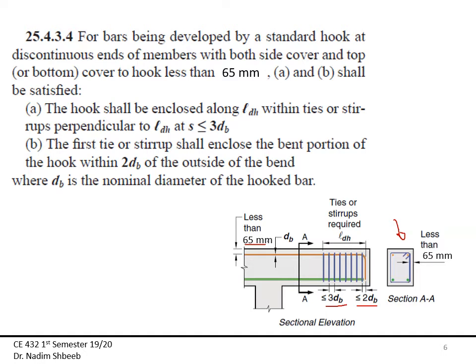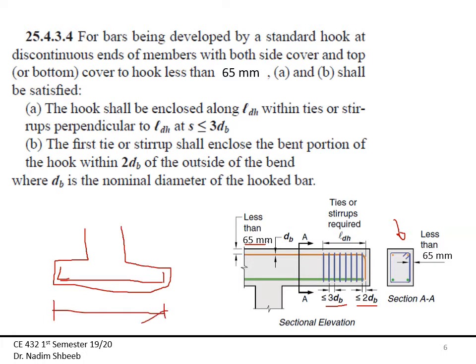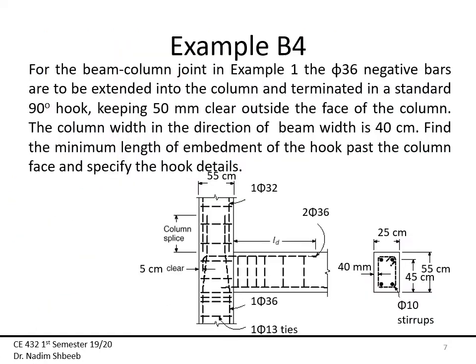When do we use hooks? Sometimes the development length is too long for the member. For example, if I have a footing and the development length of the bottom steel is not enough, I can add a 90-degree hook without increasing the footing length. Similarly, if a beam frames into a column and I don't have enough straight length for development, I terminate the bar with a hook. That's where hooks are used.